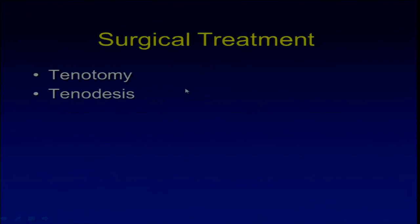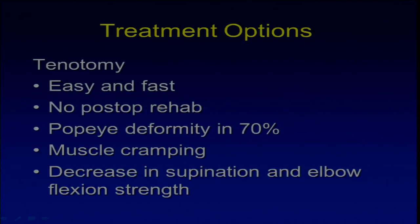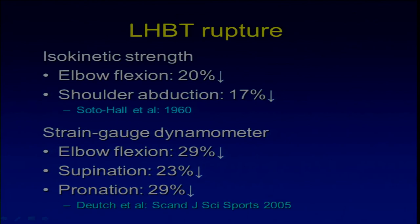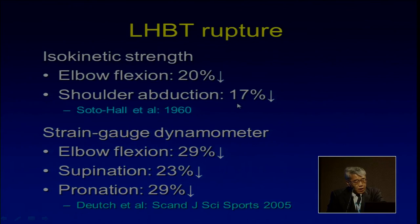For surgical treatment, there are two options: tenotomy and tenodesis. Tenotomy is easy to perform, a fast procedure, and no post-op rehab is necessary. However, Popeye deformity appears in 70% of cases, sometimes muscle cramping is a problem, and there is decrease in supination and elbow flexion strength. Papers show elbow flexion decreases by 20%, shoulder abduction by 17%, supination by 23%, and pronation by 29%. If this strength decrease is acceptable to the patient, tenotomy is appropriate.